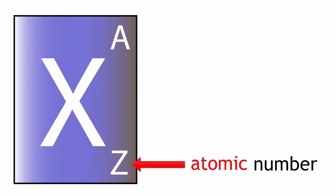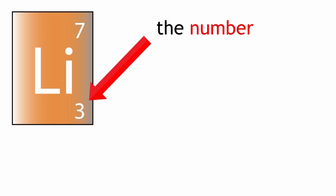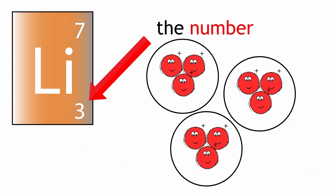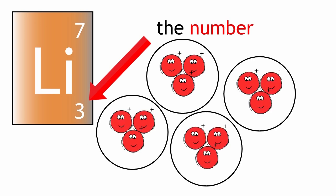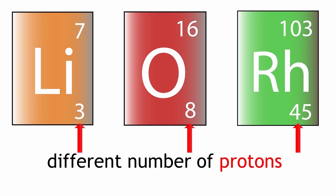The atomic number has a symbol Z. This number tells you how many protons are in one atom of an element. The number is always the same for all atoms of a particular element. Atoms of different elements have a different atomic number, meaning they have a different number of protons.